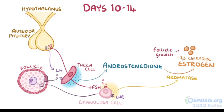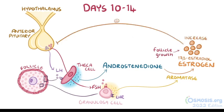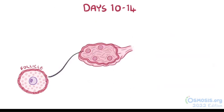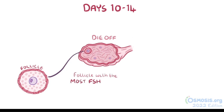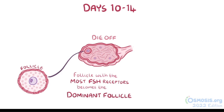As the follicles grow and estrogen is released into the bloodstream, increased estrogen levels act as a negative feedback signal, telling the pituitary to secrete less follicle-stimulating hormone. As a result of decreased FSH production, some of the developing follicles in the ovary will stop growing, regress, and die off. The follicle that has the most FSH receptors, however, will continue to grow, becoming the dominant follicle that will eventually undergo ovulation.